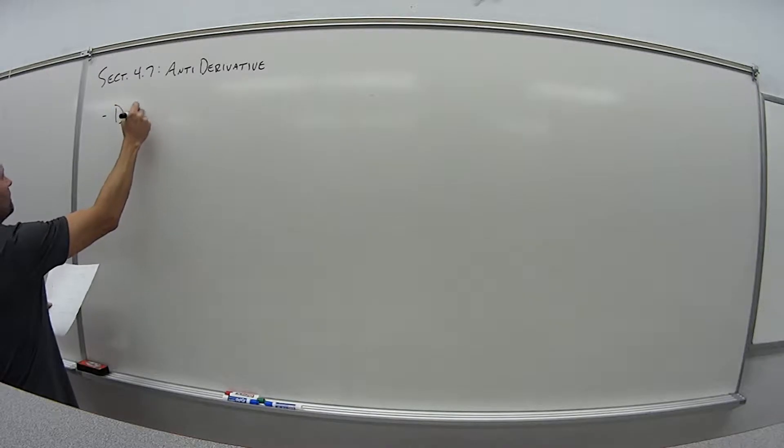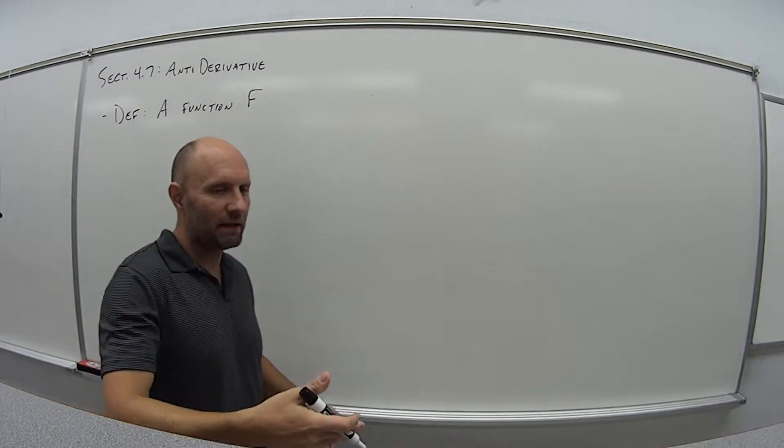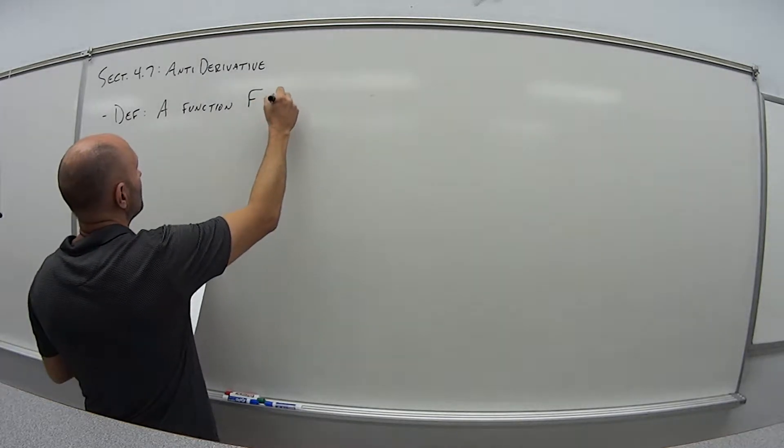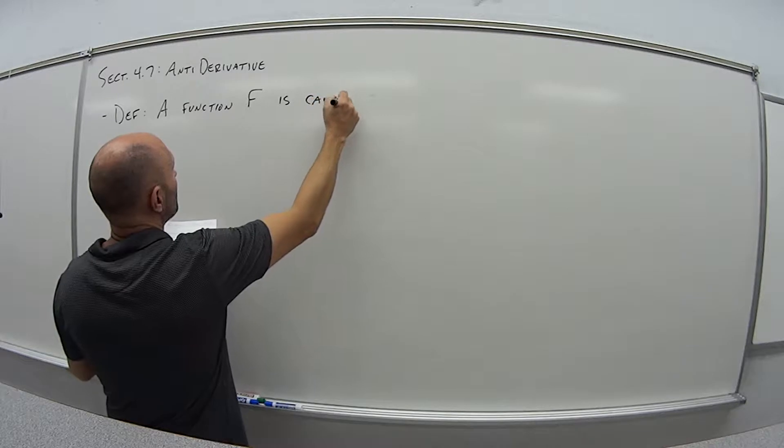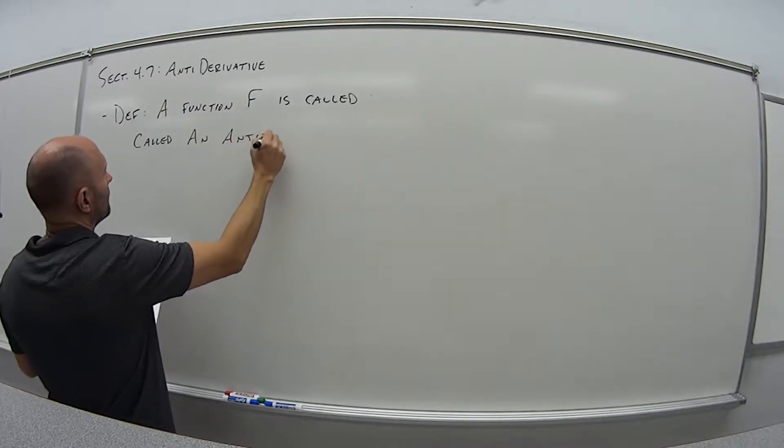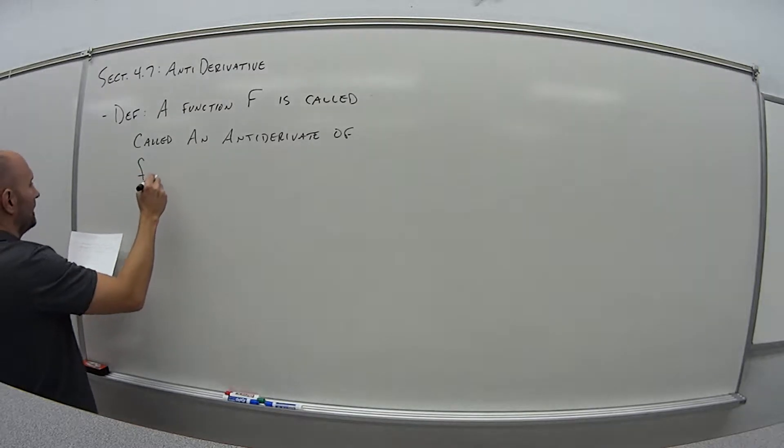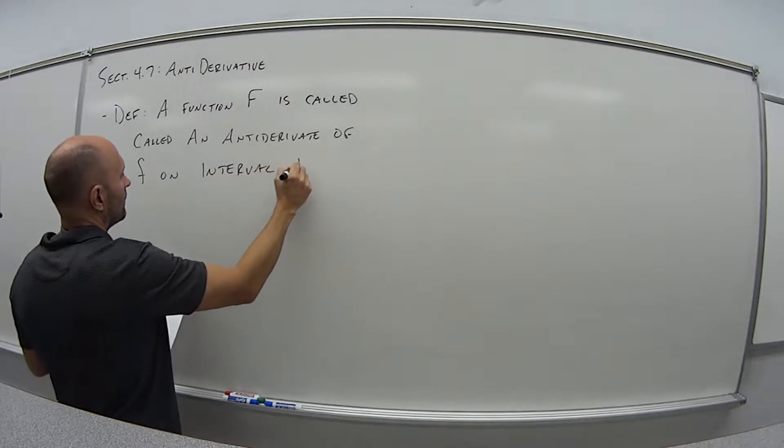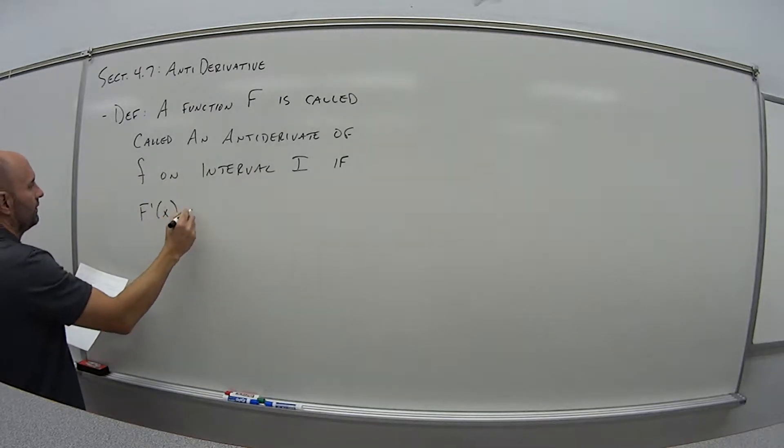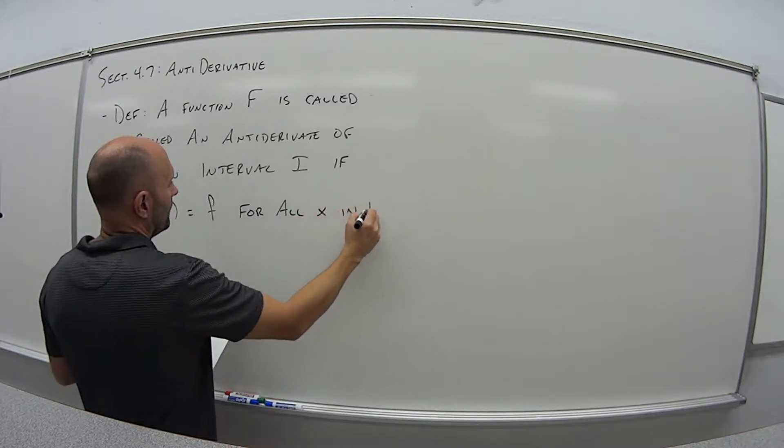So formally, a definition is a function F. And notice here now this is a capital F. When we're talking about the main starting function is little f, the derivative function is capital F. So the function capital F is called an anti-derivative of little f on interval I if F-prime of x is equal to the original function f for all x in that interval I.